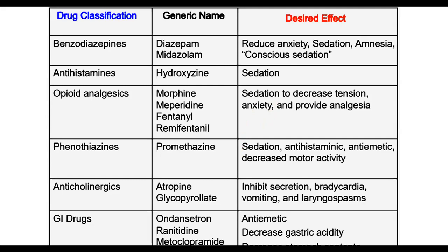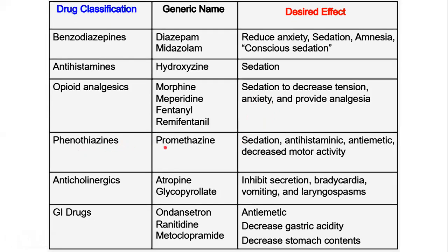Phenothiazines such as promethazine produce sedation, antihistaminic effect, anti-emetic effect, and decreased motor activity. Anticholinergics — atropine, as many of you predicted — inhibit secretions, reduce bradycardia risk, and inhibit vomiting and laryngospasm, combating multiple unwanted symptoms.